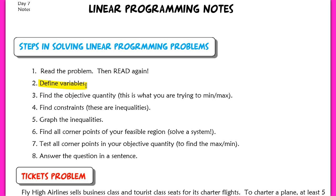Your next step is to find your objective quantity. An objective quantity is just what you're trying to either minimize or maximize in terms of the word problem. A lot of times this could be profit or it could be minimizing cost, that kind of thing.